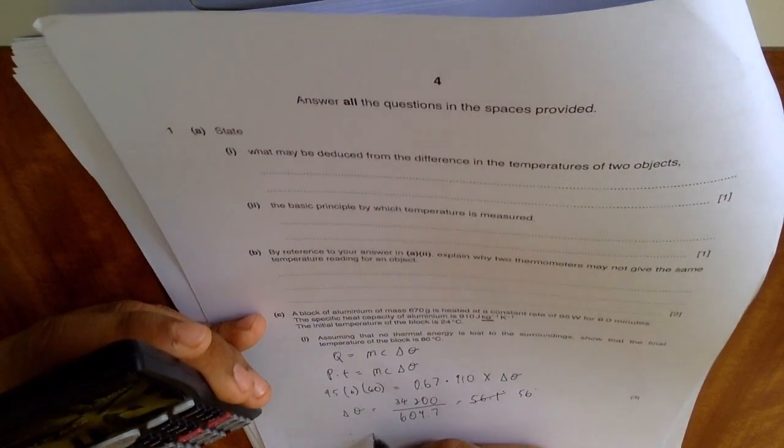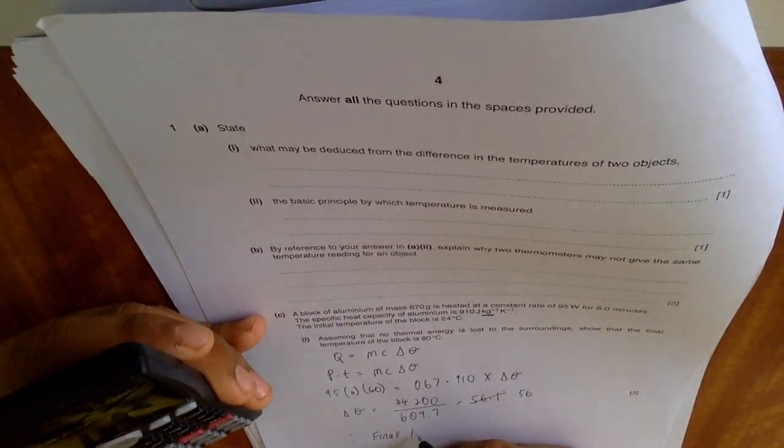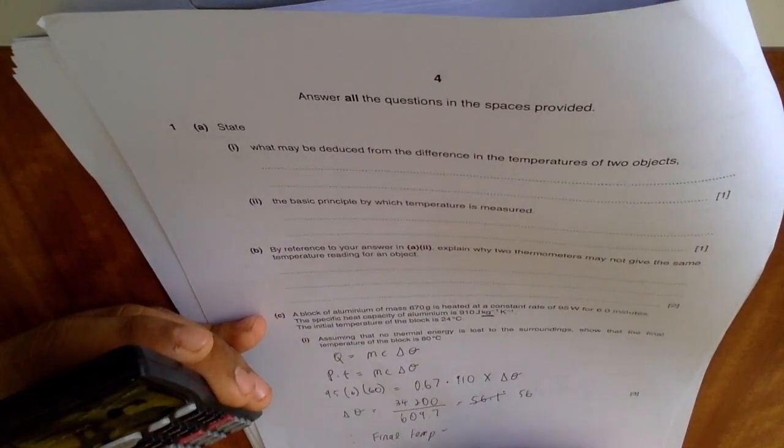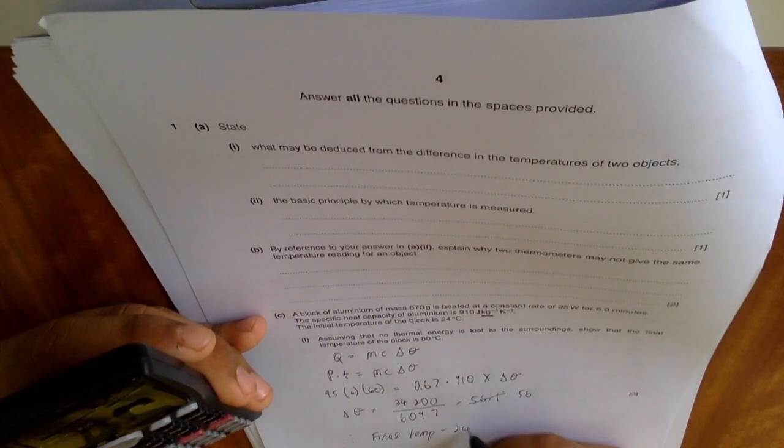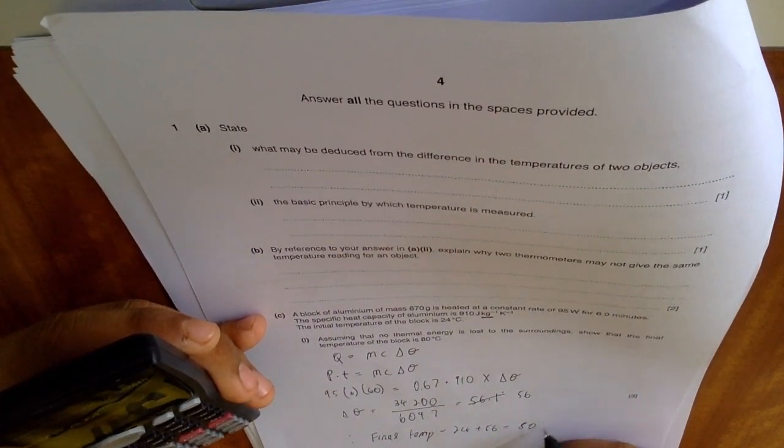So final temperature is equal to 24 plus 56 is equal to 80 degrees celsius.